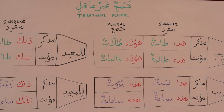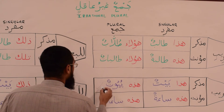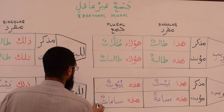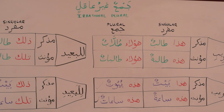Similarly, بيوت and ساعات are treated as feminine singular. So by now we should have a basic idea of what جمع غير عاقل is. In the next video insha'Allah, we'll do many examples, and hopefully it becomes clearer.